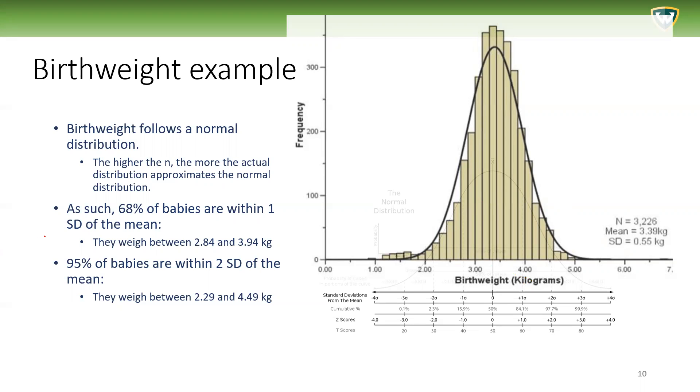We already know that generally from the normal distribution, 68% of babies are within one standard deviation of the mean. That is, 68% of birthweights of babies are within one standard deviation of the mean, and that means they weigh between 2.84 and 3.94 kilograms.